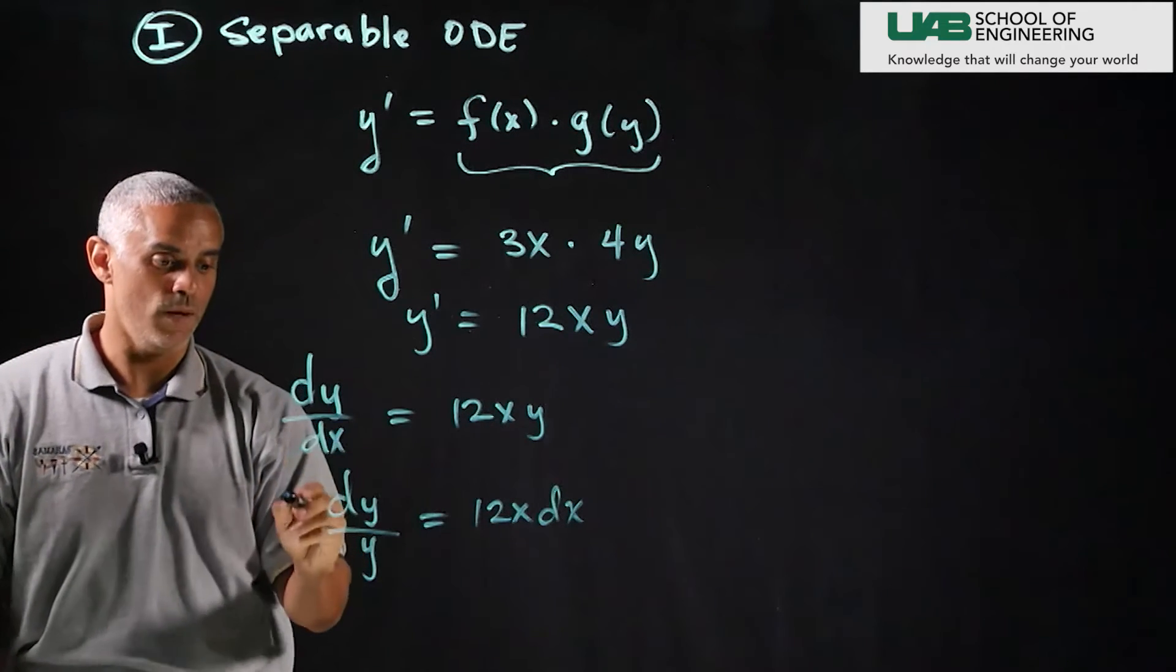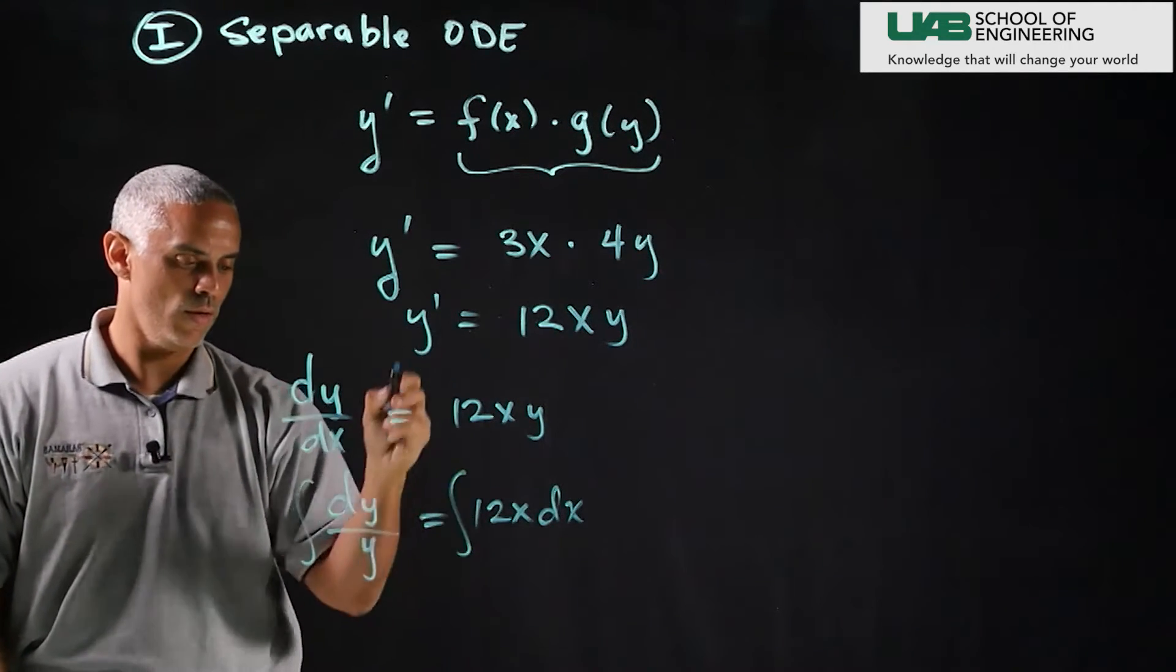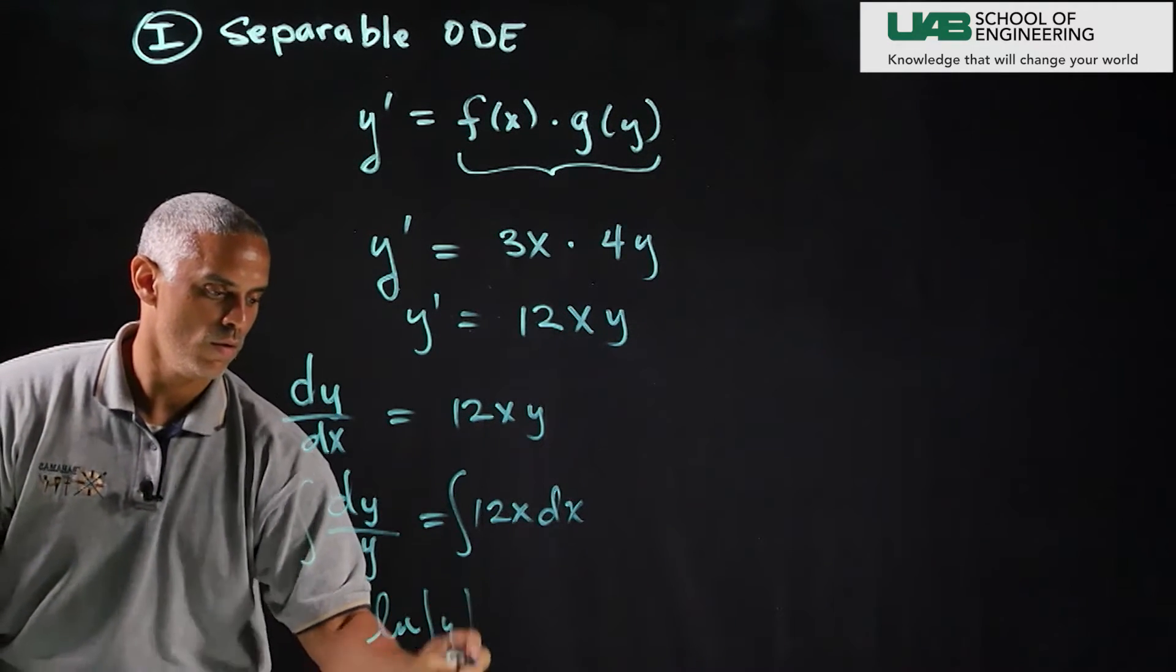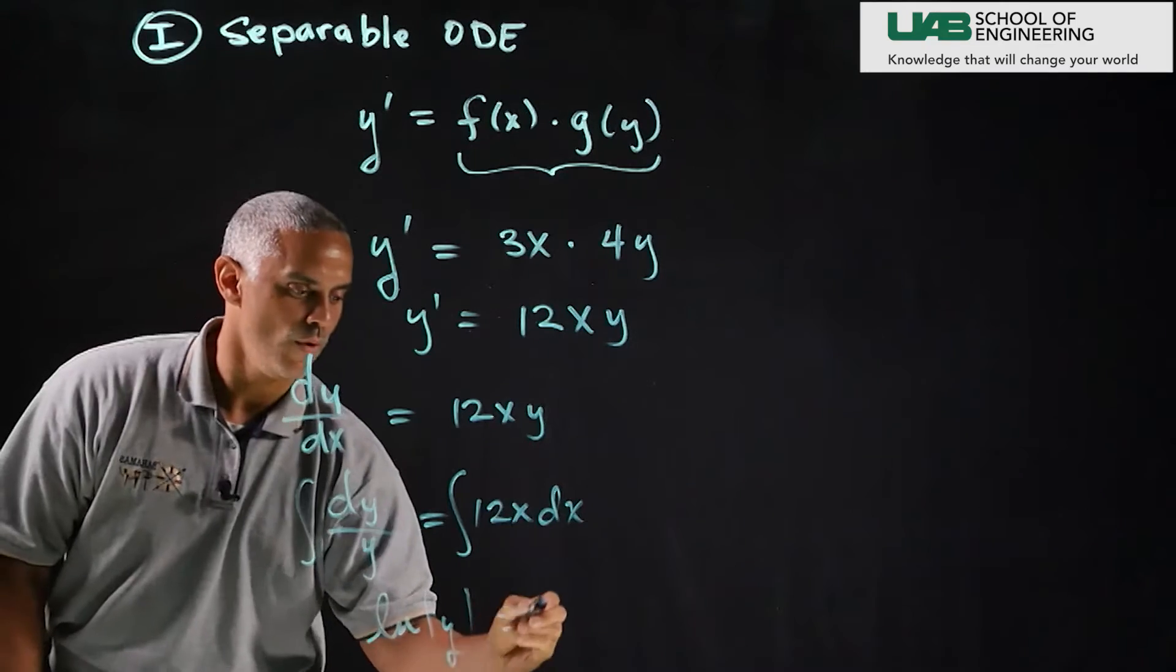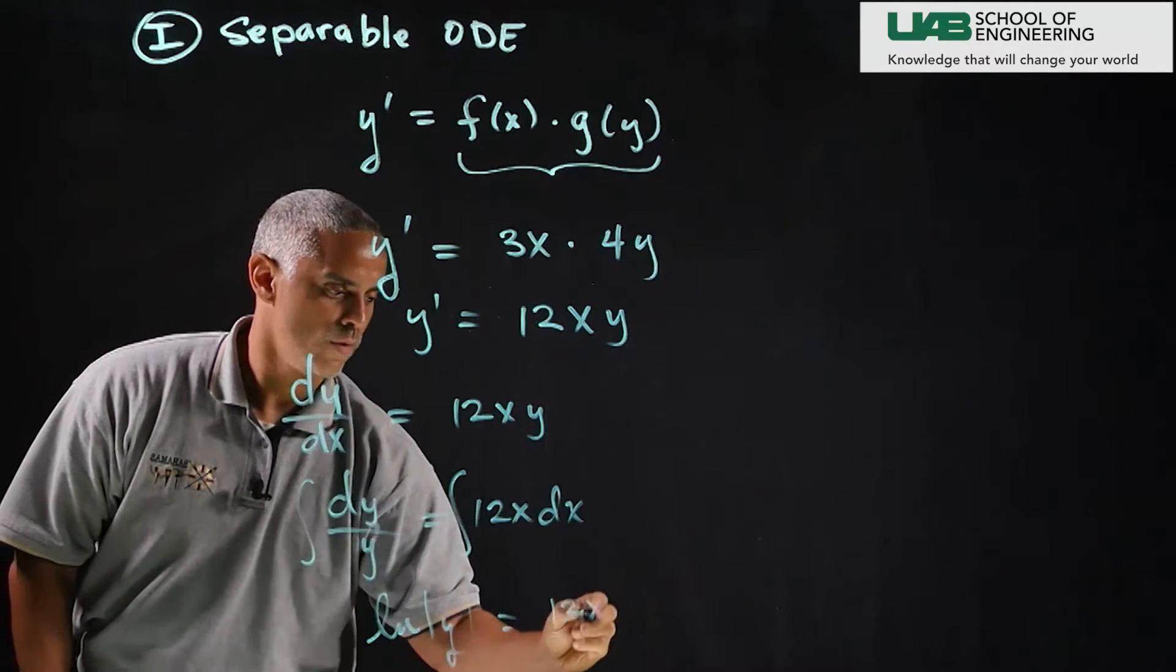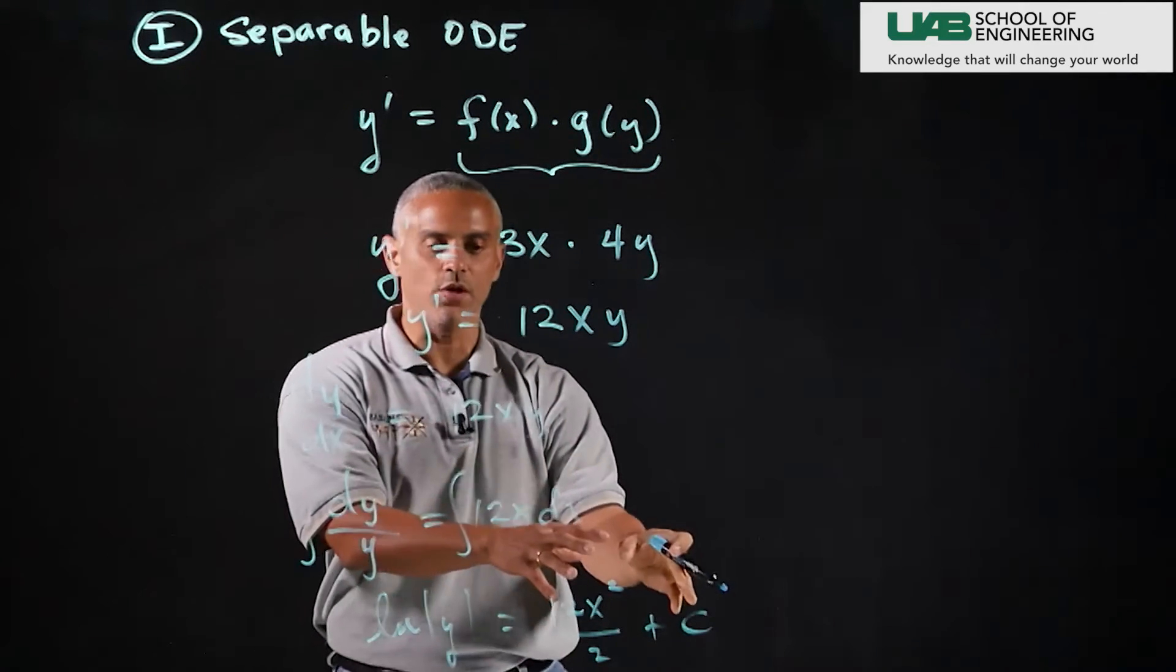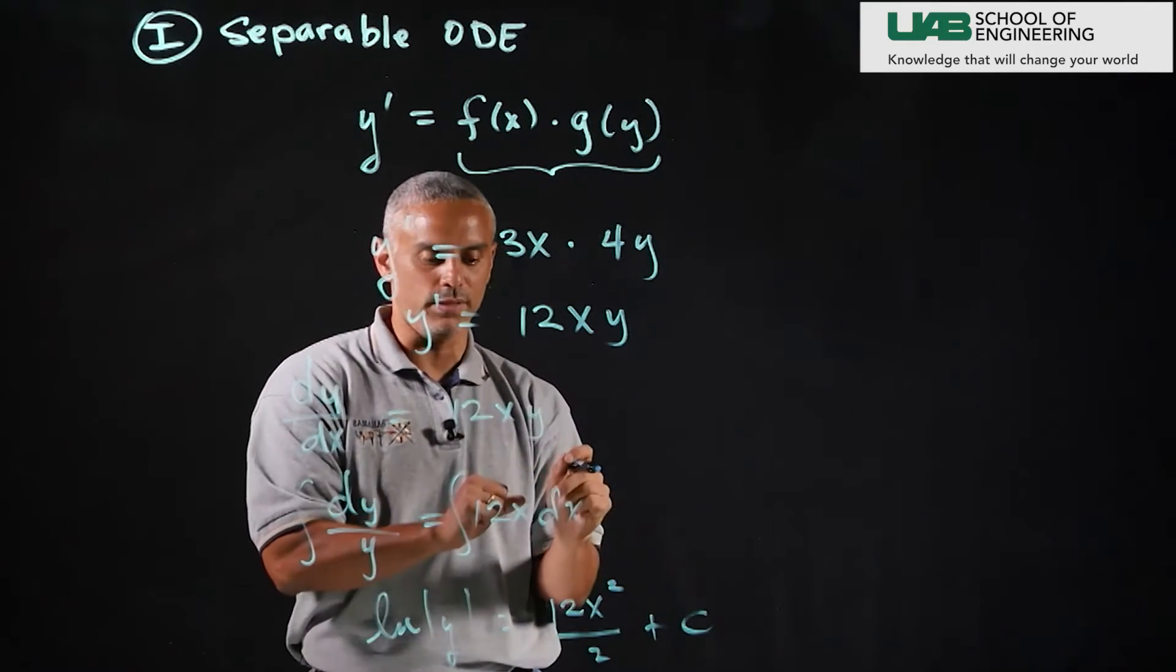The next step is to integrate. And if I integrate dy over y I get the natural log of the magnitude of y on the right-hand side of 12x squared over 2 and I'll lump the constant from the left-hand side over to the right-hand side and get this arbitrary constant c.